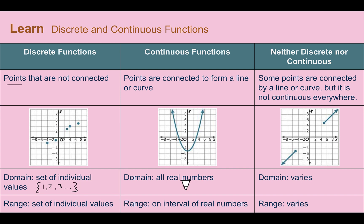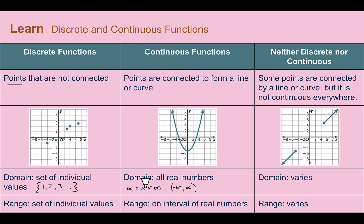For continuous functions, they may have some dots to begin with, but they are connected to form either a straight line or a curve of some sort. If it's a function and it's continuous, your domain is going to be all real numbers — sometimes written as negative infinity to positive infinity. It just means all the numbers from negative infinity to positive infinity, and it's an X since we're talking about domain. Your range, depending on your type of function, could change.